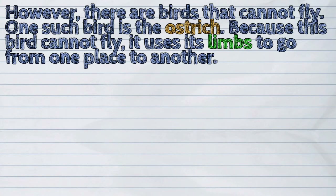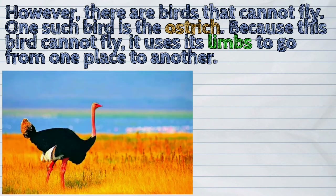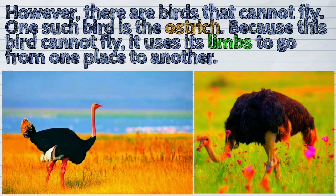However, there are birds that cannot fly. One such bird is the ostrich. Because this bird cannot fly, it uses its limbs to go from one place to another.